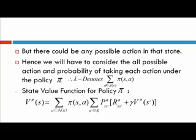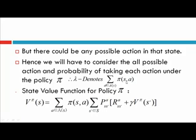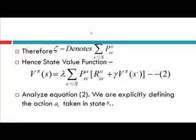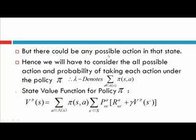Lambda denotes summation of all a belonging to A(s), where A(s) denotes the set of all possible actions in state s. This is the summation of all a belonging to A(s) of π(s, a), which denotes the probability of selecting action a in state s. And theta denotes summation of all s' of P(a, s').